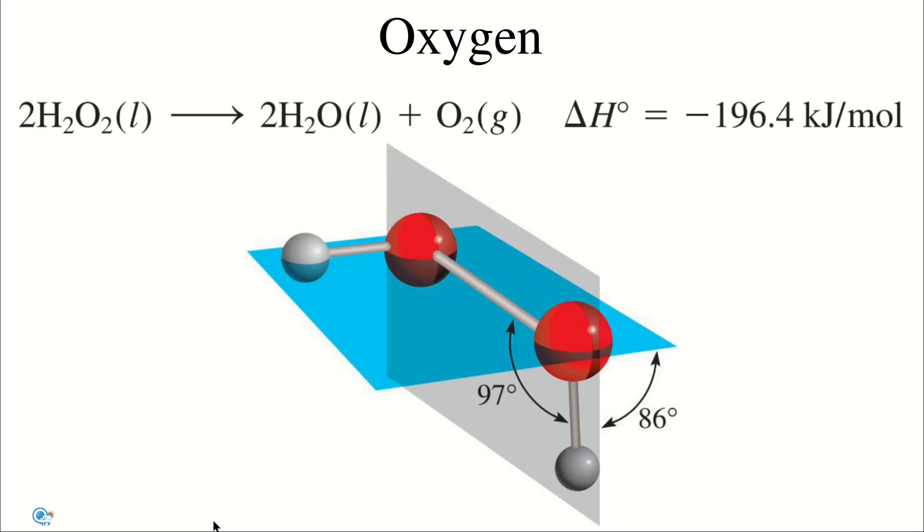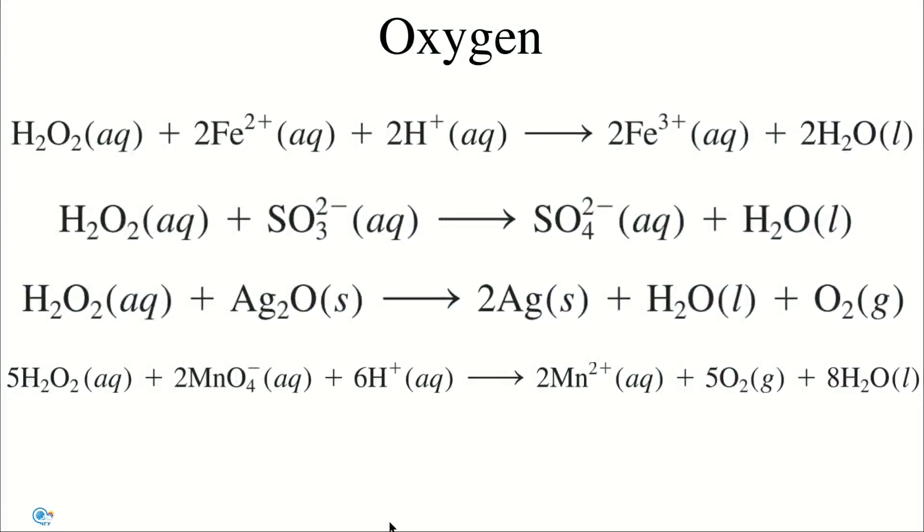Hydrogen peroxide is a strong oxidizing agent. It can oxidize iron(II) to iron(III). It also oxidizes sulfite to sulfate anion. In addition, hydrogen peroxide can act as a reducing agent towards substances that are stronger oxidizing agents than itself. For example, hydrogen peroxide reduces silver oxide to metallic silver, and permanganate to manganese(II) in acidic solution.